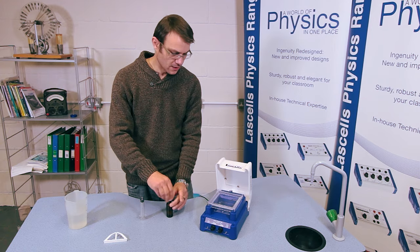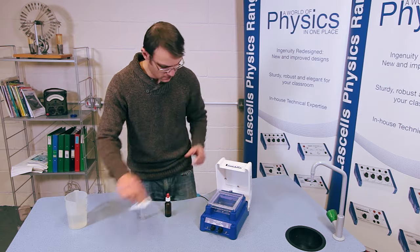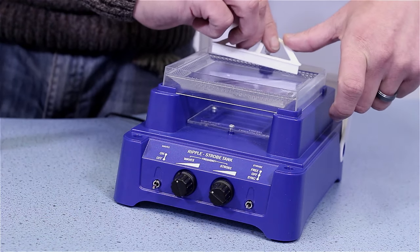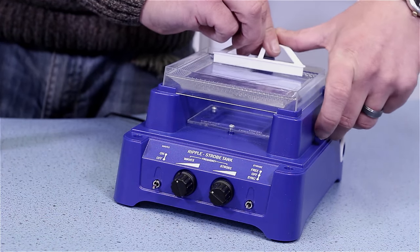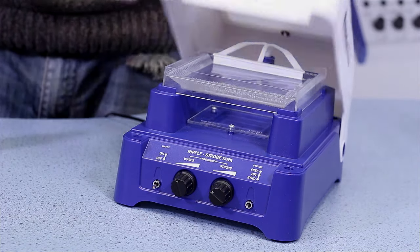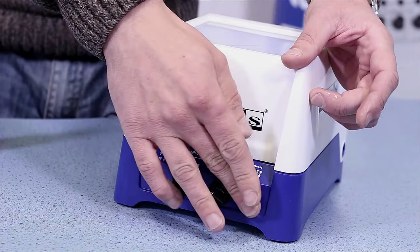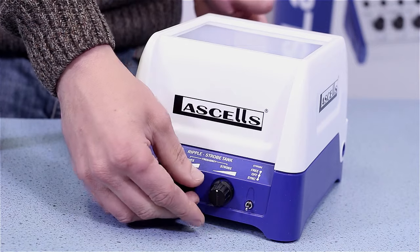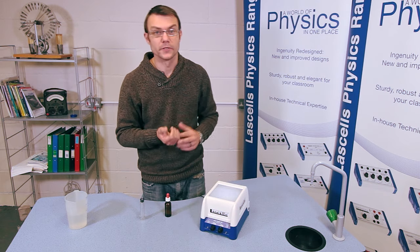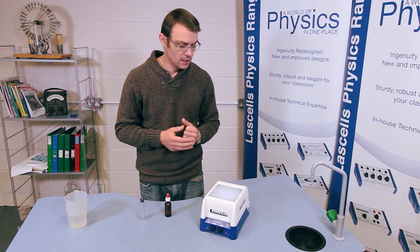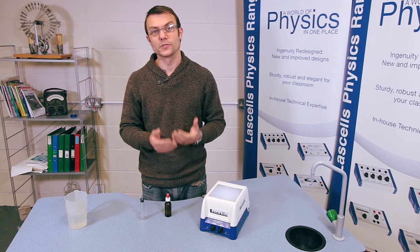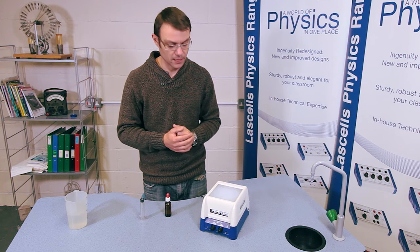Now at this point if we close the lid with the dipper installed and turn the tank on, this is what you'll probably see when you first attempt refraction. There is very little difference between the waves that are on top of the shape and the waves that aren't. And that's due to the water being too deep on top of the shape.